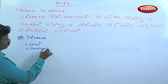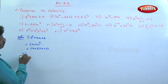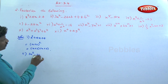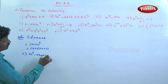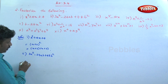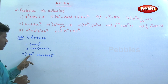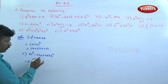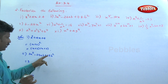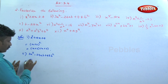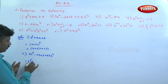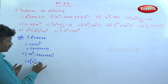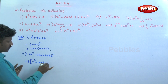The second question: 3a squared minus 24ab plus 48b squared. If we take 3 as common factor, taking 3 out, the remaining expression inside is a squared minus 8ab plus something.